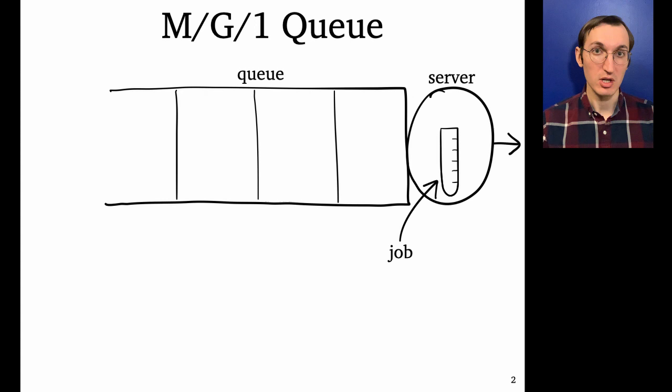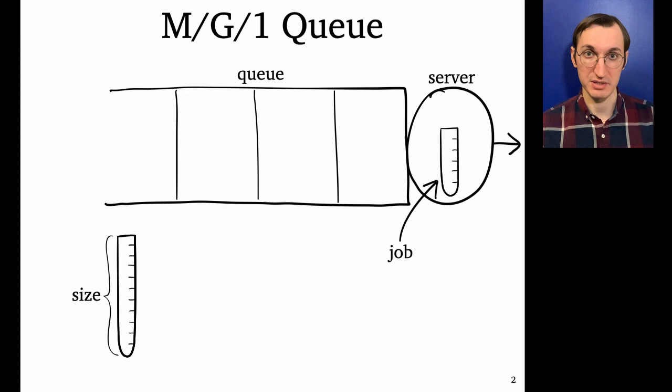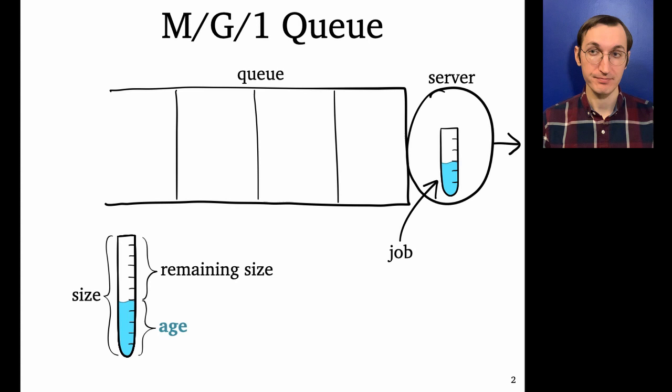So in this talk, this is what a job looks like. It's going to be a test tube whose height is its size or service requirement. And as we serve a job, we're going to represent that as filling the test tube with water. So the amount of service a job has received so far, that's the water level, we're going to call that its age and the rest of the job is its remaining size.